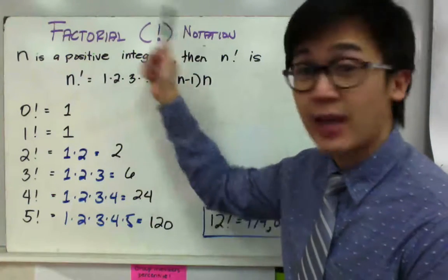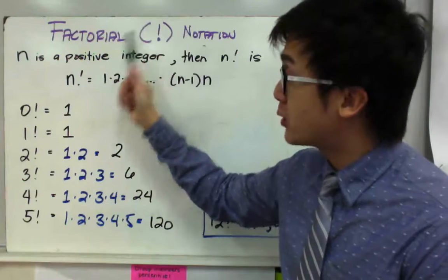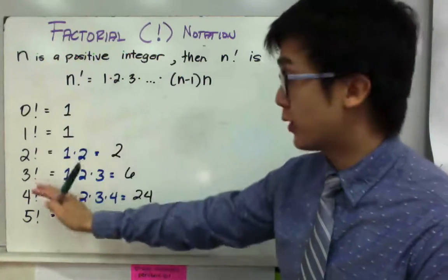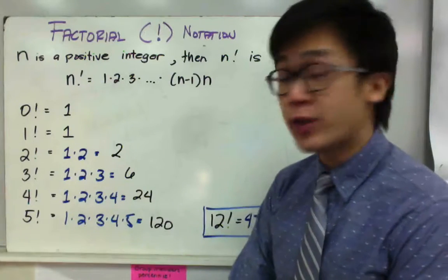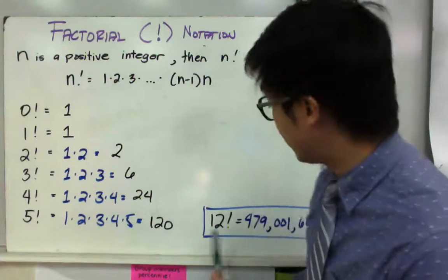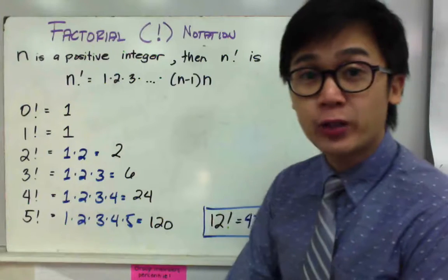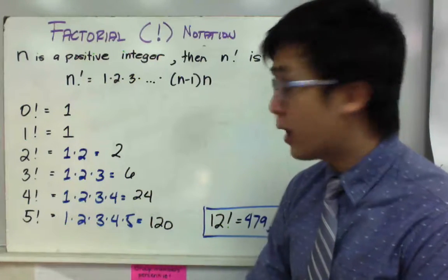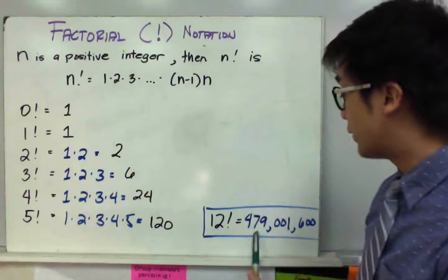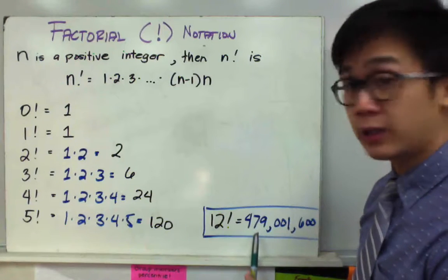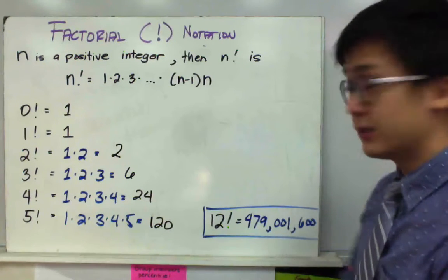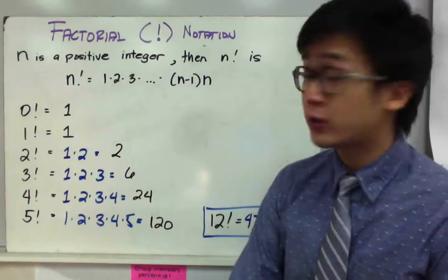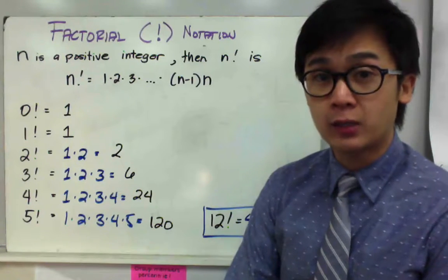Every time you see this exclamation point, you should be able to perform the operation just like what I have shown you. So if you are interested to know what 12 factorial is — 12 factorial means 12 times 11 times 10 times 9 all the way to 1 — it's simply equal to 479,001,600. And that's how we perform factorial notation in mathematical problems.